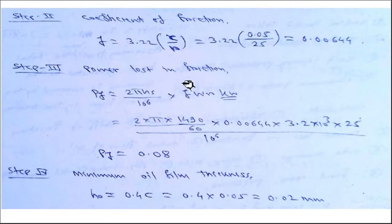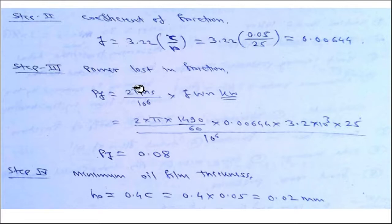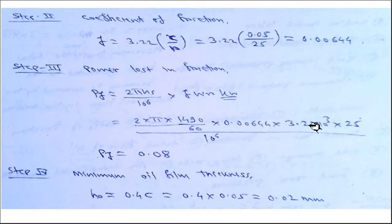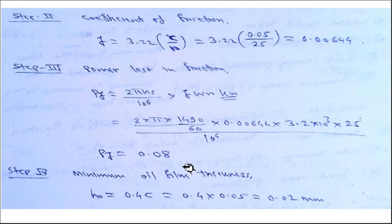The power lost in friction is calculated using Pf = 2π × Ns × f × W × r / 10⁶. Substituting Ns = 1490/60, f = 0.00644, W = 3200 N, and r = 25 mm, we obtain the power lost in friction as 0.08 kW.